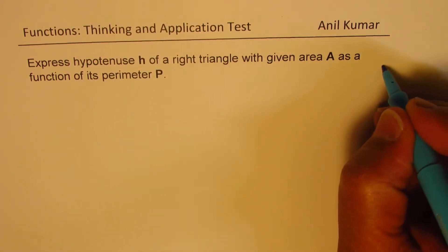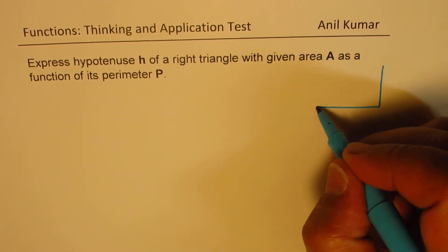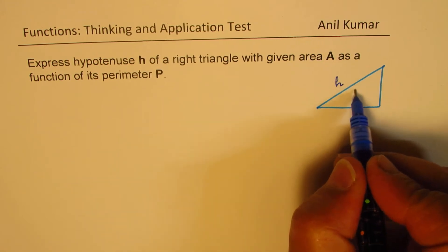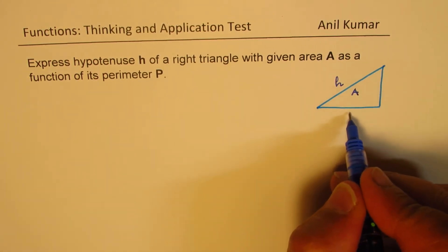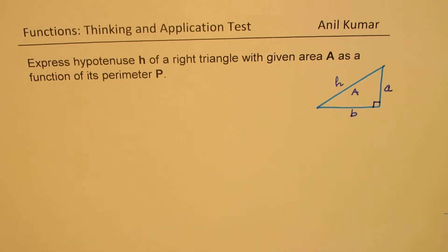So let's consider a right triangle. In this triangle, we are given that the hypotenuse is h, the area is A, and the perimeter is P. Let us assume that these sides are a and b. So that is the right triangle we are talking about.